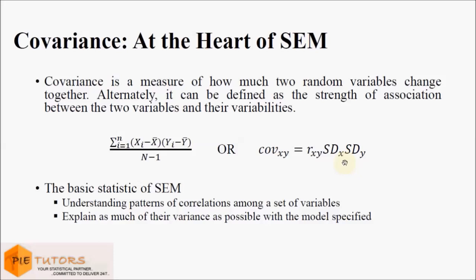So covariance is at the heart of covariance-based SEM. So what is covariance? Covariance can be understood as a measure of how much two random variables change together. In other words, you can consider covariance as a measure of strength of association between two variables and their variability.